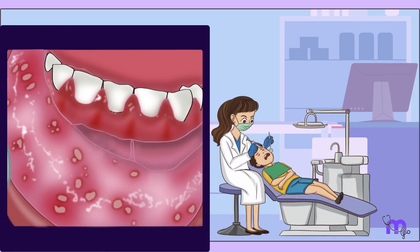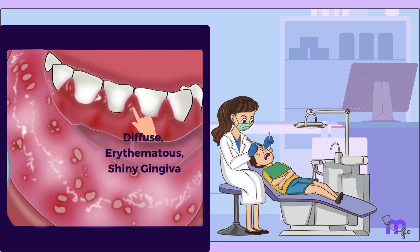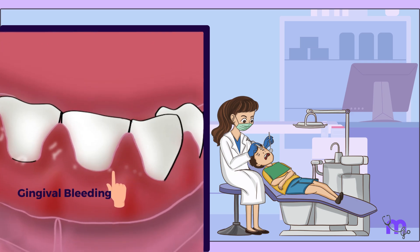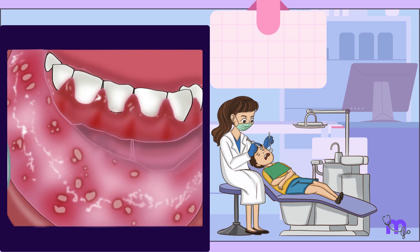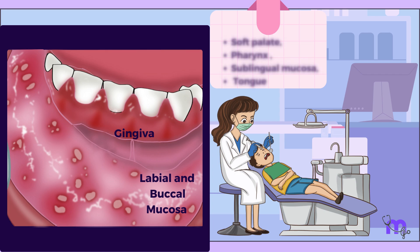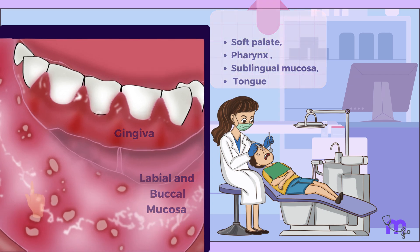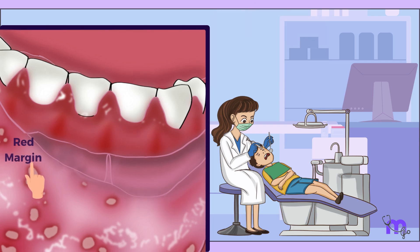On intraoral examination, I noted diffuse, erythematous, shiny gingiva and the adjacent oral mucosa, gingival bleeding, and small ulcers on the gingiva, labial and buccal mucosa, soft palate, pharynx, sublingual mucosa, and tongue. The ulcers showed a red raised margin with a greyish-white centre.